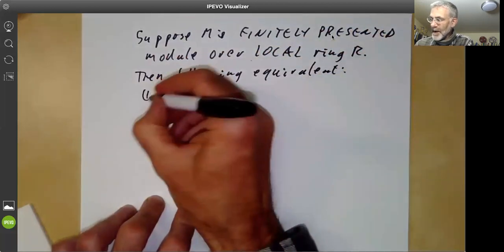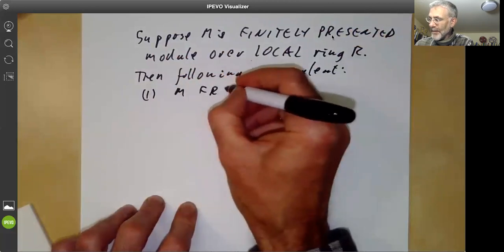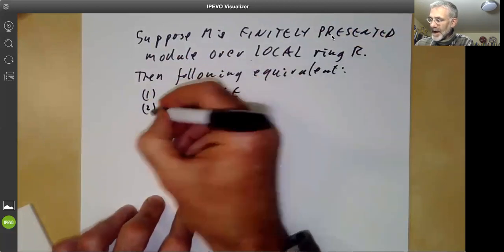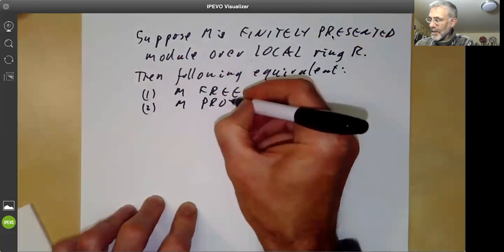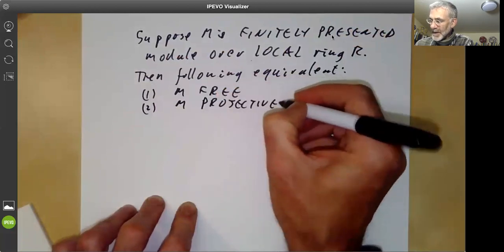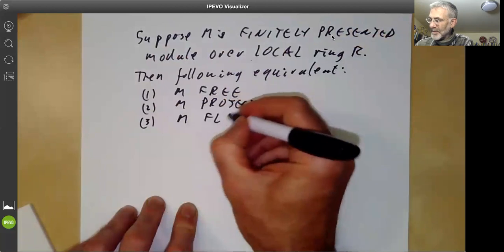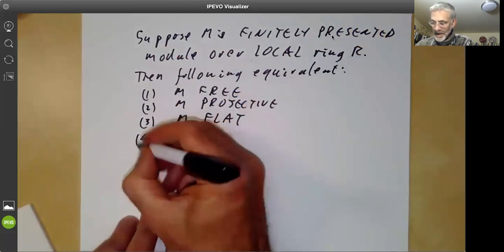First of all, M is free. Secondly, M is projective. And thirdly, M is flat.